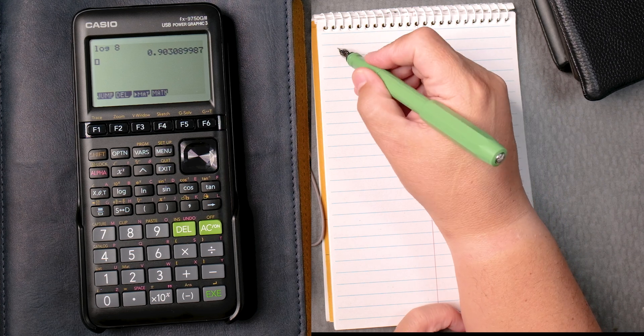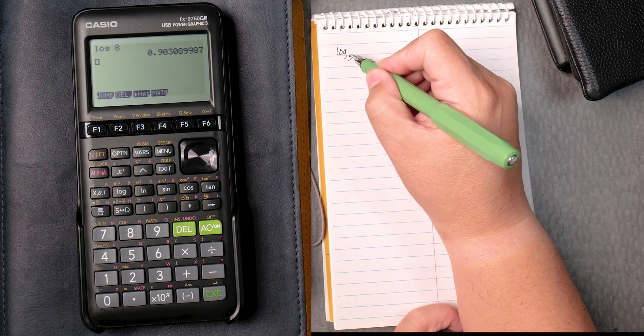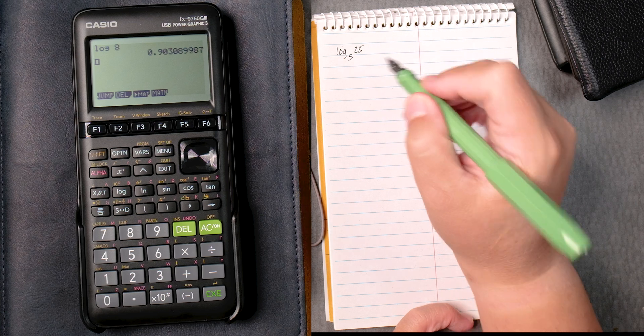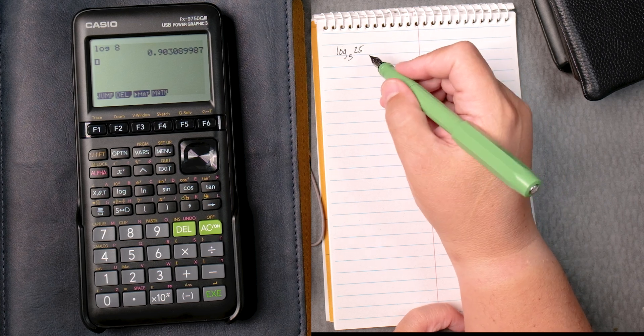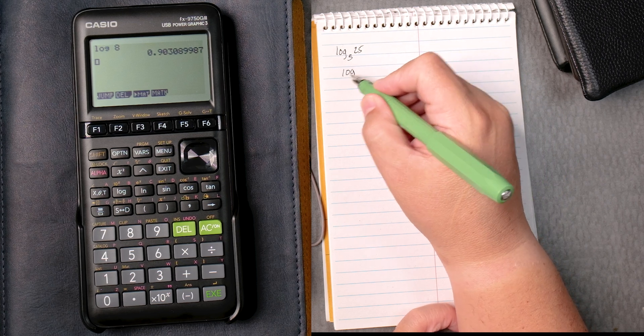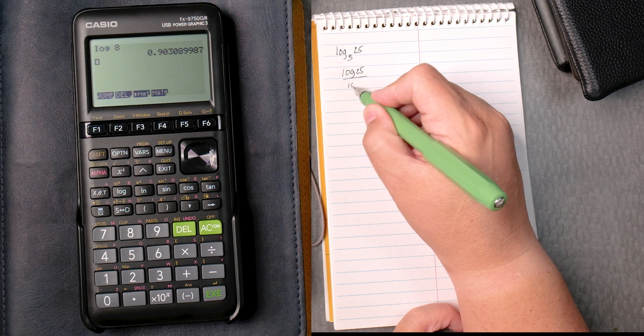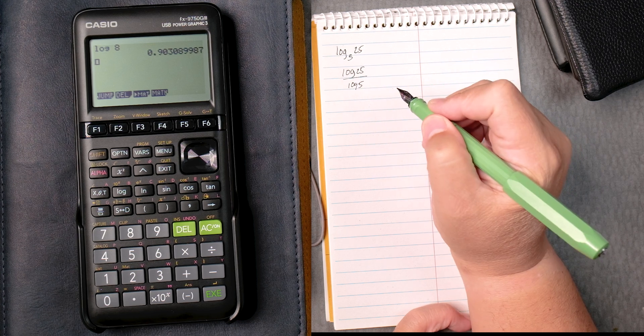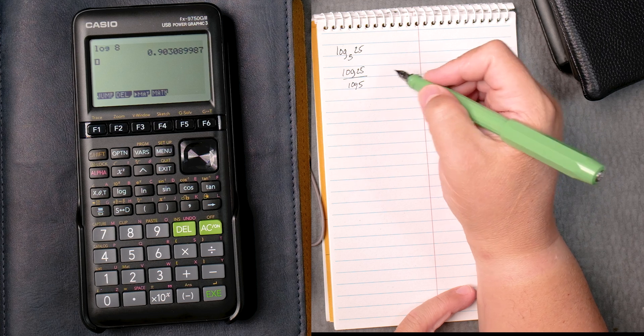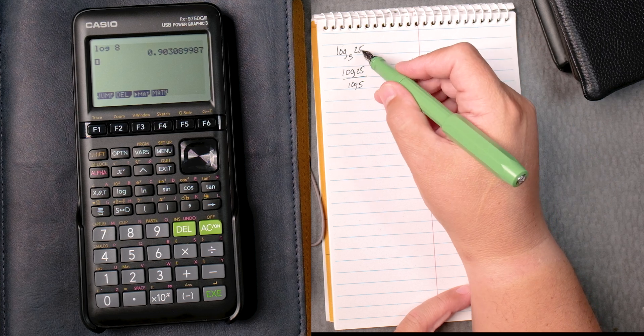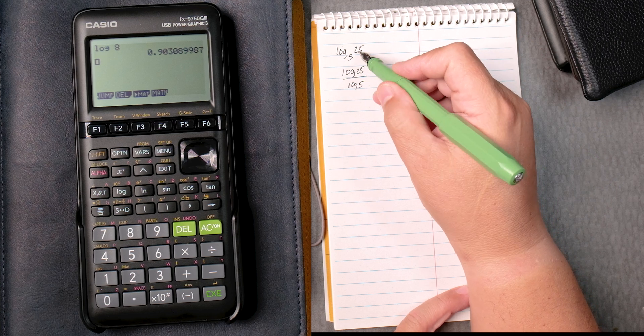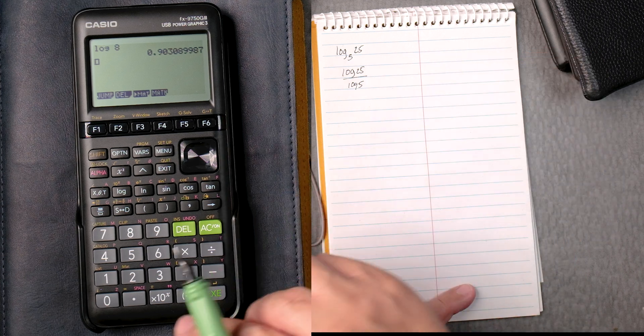Let's say I had the log of base 5 to the 25 and I wanted the answer. Best way for this calculator is log of 25 over the log of 5. There's a long explanation why this works, but 5 is in the bottom, 25 is in the top, and it has both logs. So how do we do this?